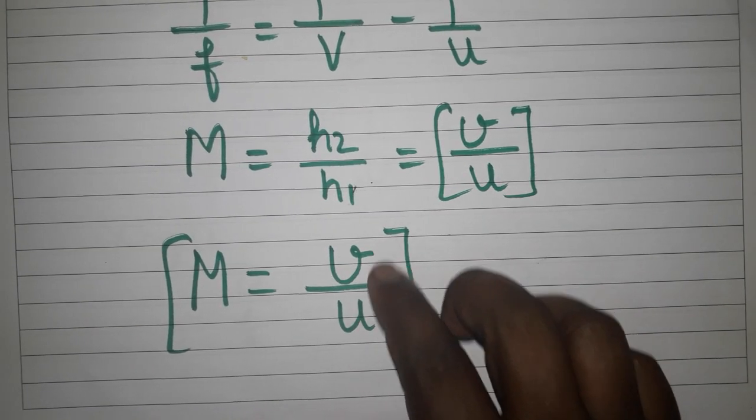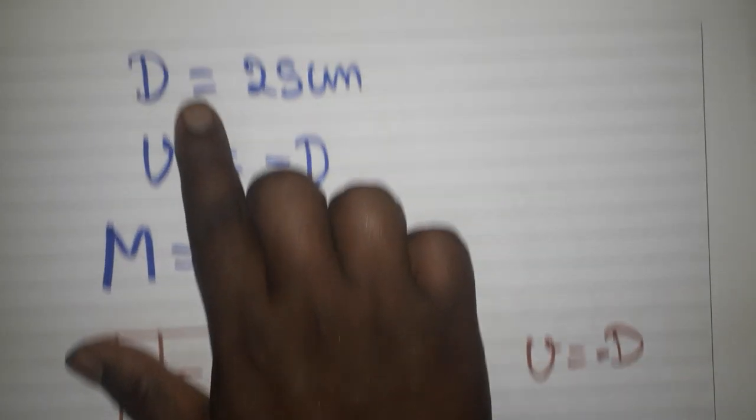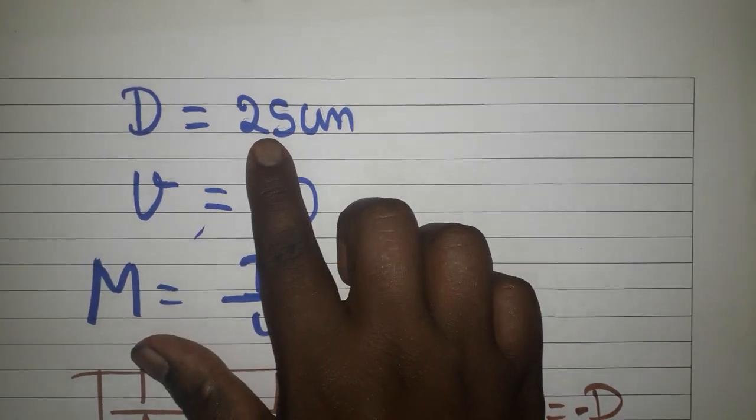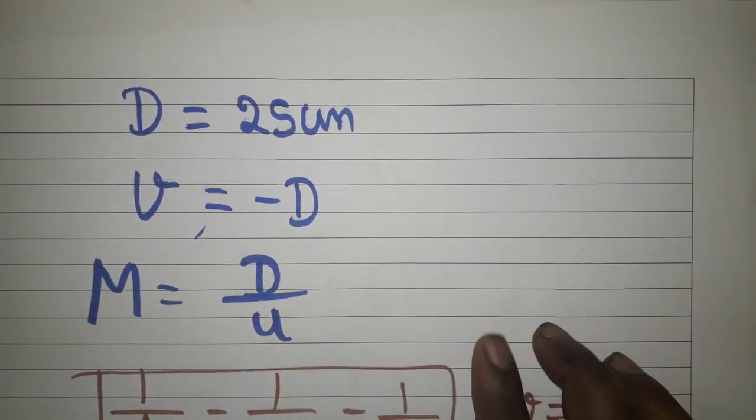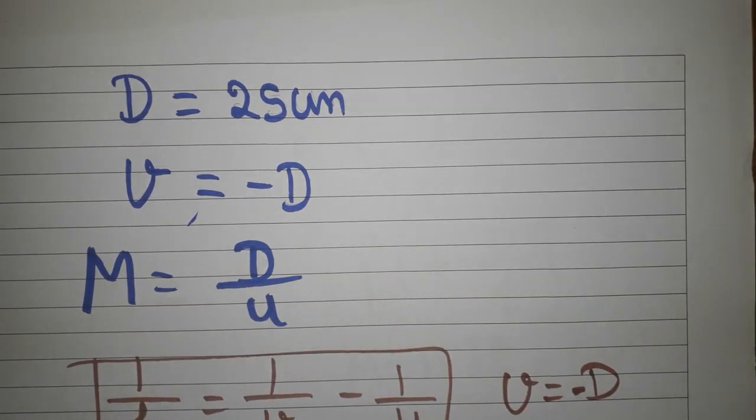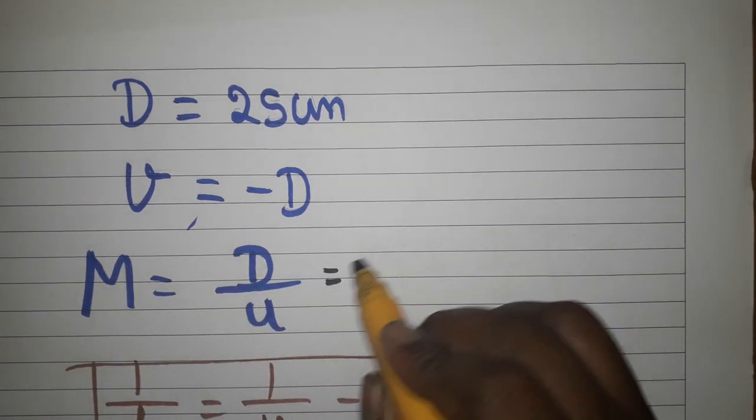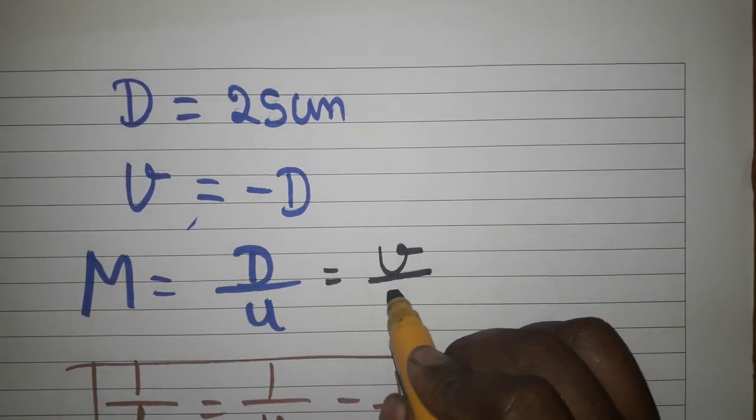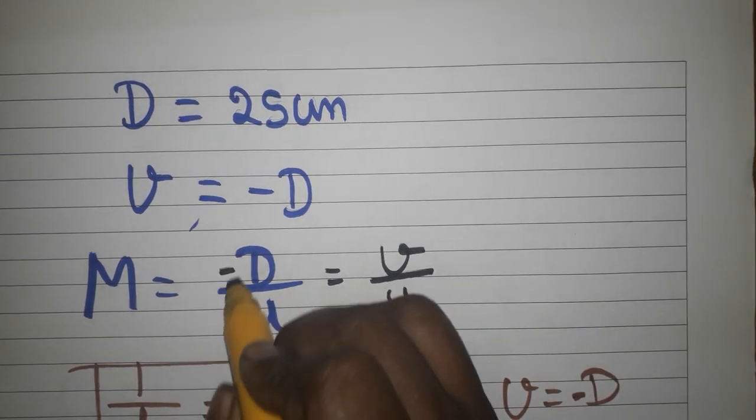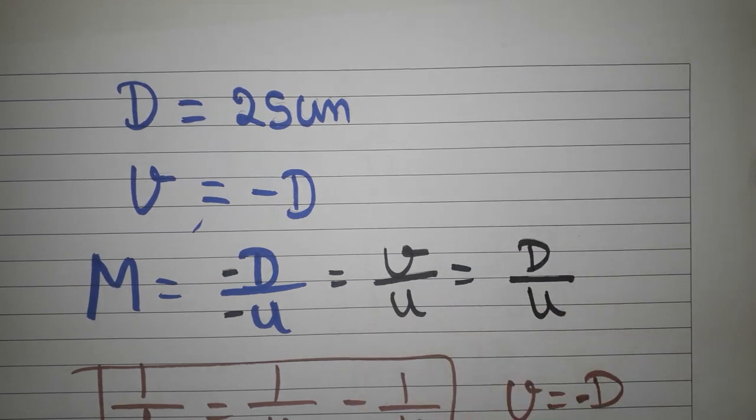I am taking the final image as D. It's going to be on the left side, minus D. Least distance is 25 centimeters. So finally, magnification is v divided by u, which becomes D divided by u. Because v is taken as D, v divided by u becomes D divided by u. u is negative, v is negative. Both are negative, so the answer will become D divided by u.